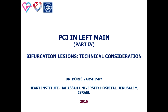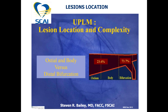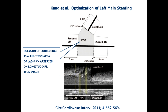This presentation is about technical aspects of PCI in bifurcation left main coronary artery disease. Evidence shows that a majority of left main coronary artery stenoses are localized in the distal part of the vessel. Distal left main narrowing suggests lesion location at the site of the confluence zone.